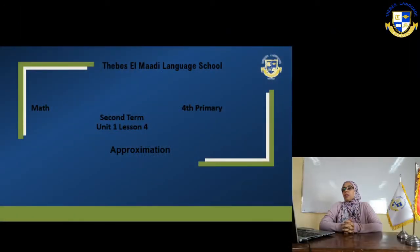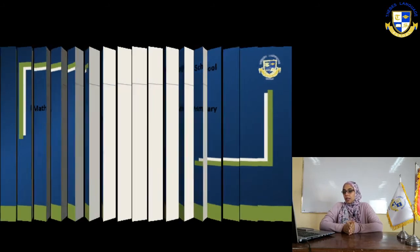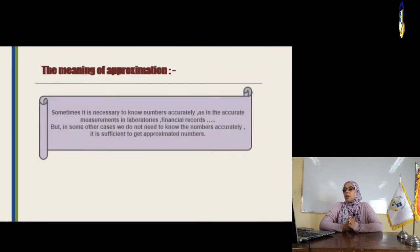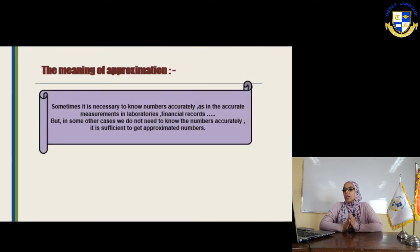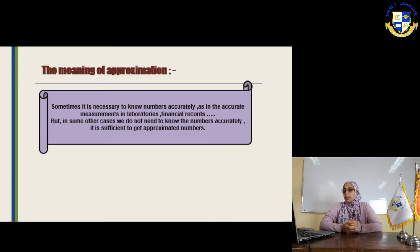What is the meaning of approximation? Sometimes it's necessary to know numbers accurately, as in accurate measurements in a lab or in financial records. But in some other cases, we don't need to know the numbers accurately — it's sufficient to get approximated numbers.